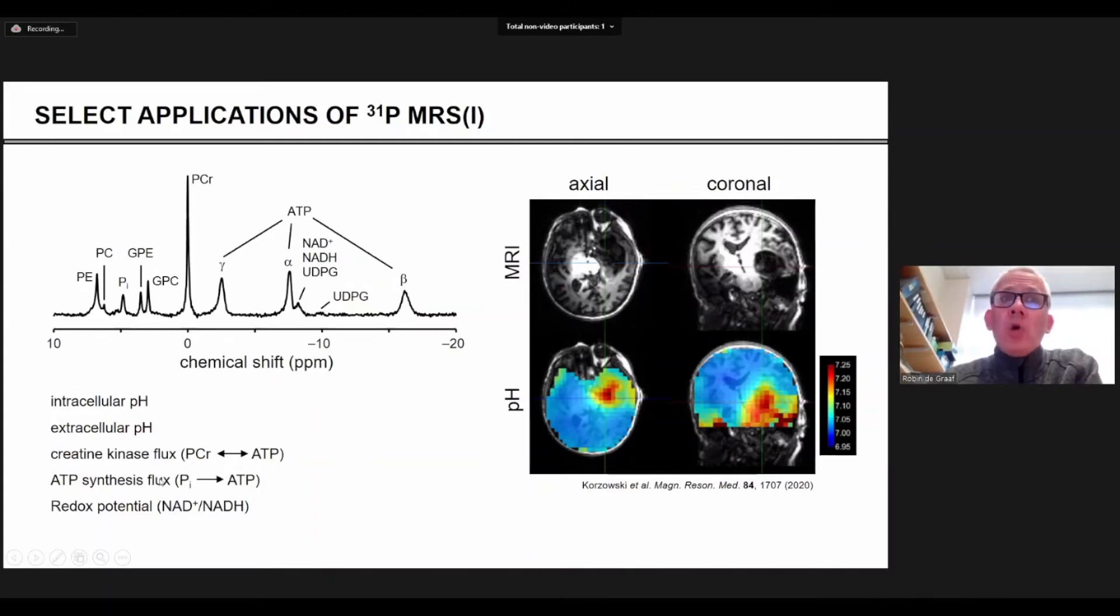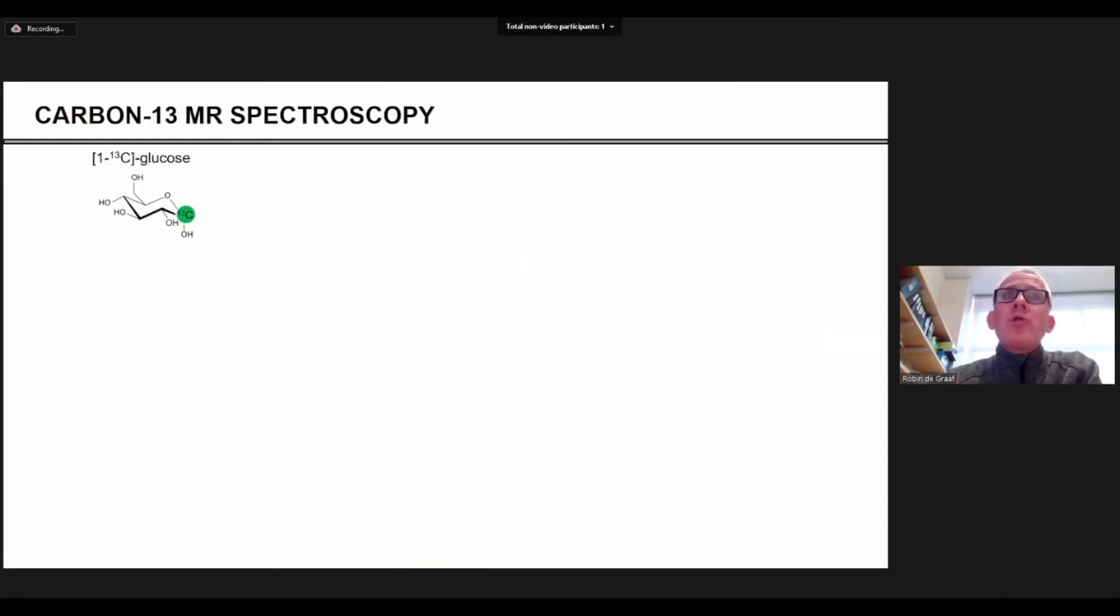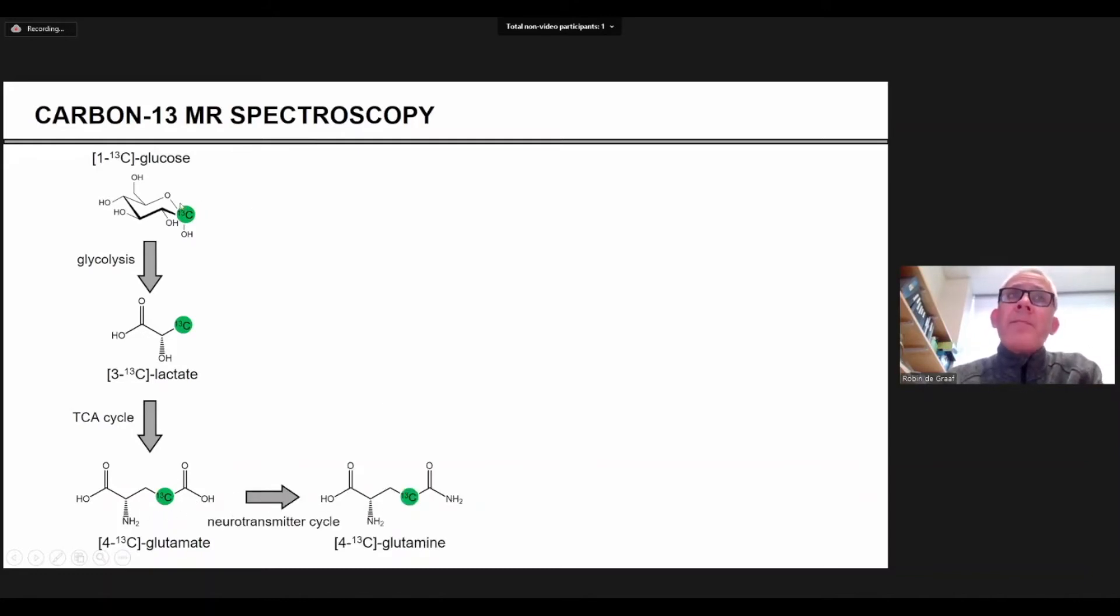Now these flux measurements are also very important and you can measure them with a so-called saturation transfer experiment. But they are measuring rates that are relatively fast. If you want to measure slower rates, you can use carbon-13 MR spectroscopy. The normal carbon, carbon-12, doesn't have a nuclear spin, so it doesn't give you any signal, but carbon-13 does. So what you can do is you can purchase glucose that is enriched with carbon-13 and then give that glucose to the subject. The glucose is metabolized as if it was normal glucose and it can undergo glycolysis, it can enter the TCA cycle, the labeled glutamate then can undergo neurotransmission, etc.